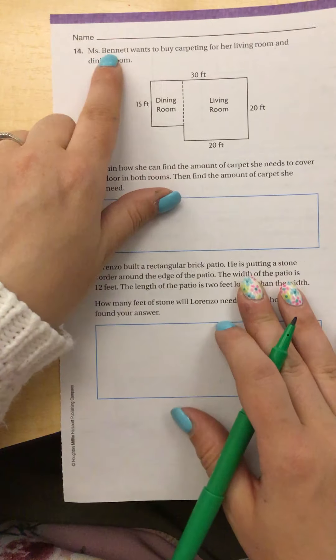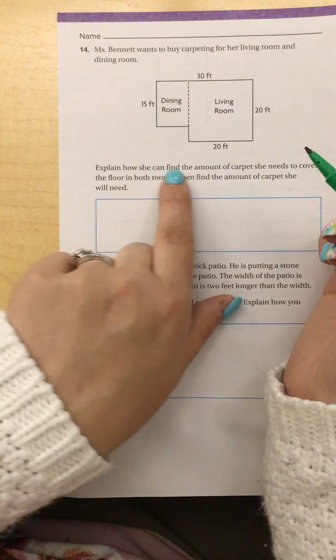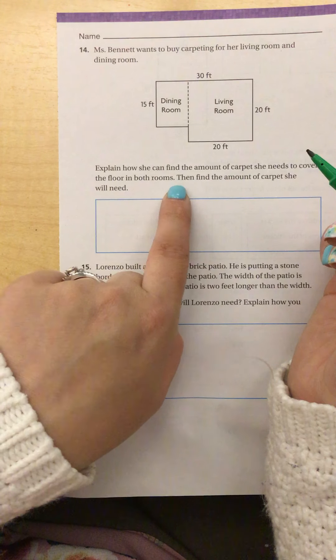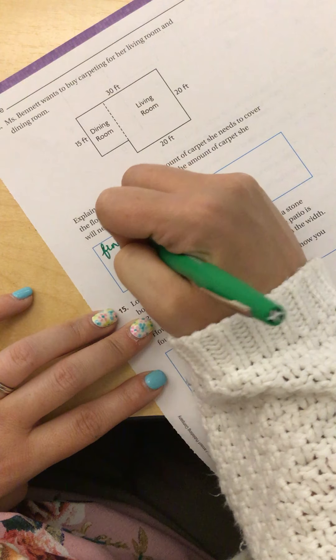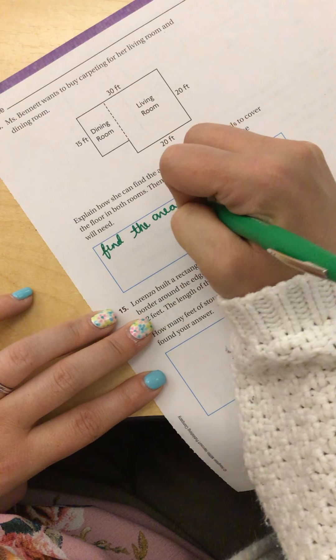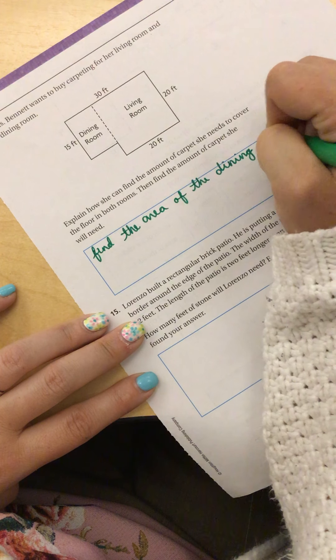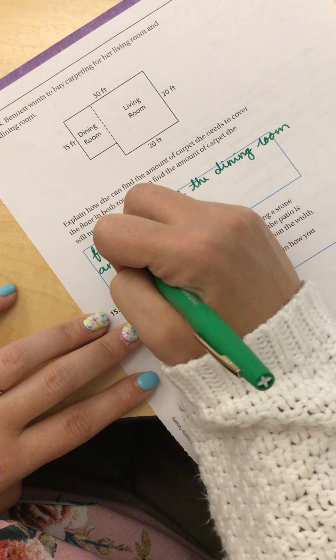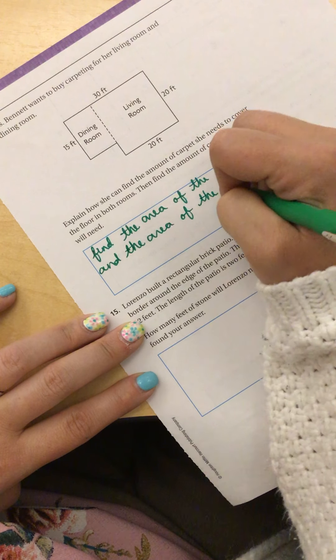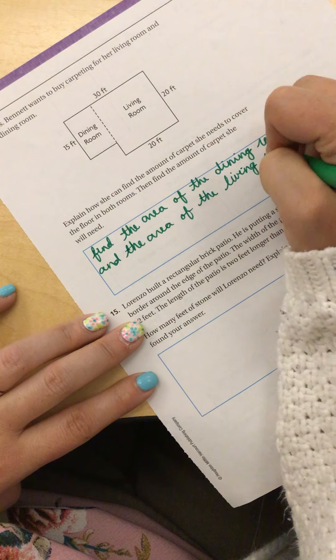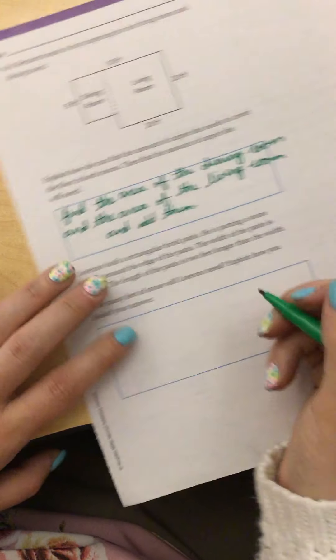Okay, next question number 14. Mrs. Bennett wants to buy carpeting for her living room and her dining room. So she wants to carpet everything. Explain how she can find the amount of carpet she needs to cover the floor in both rooms, then find the amount. So I can find the area of the dining room and the area of the living room and add them. There's my explanation.